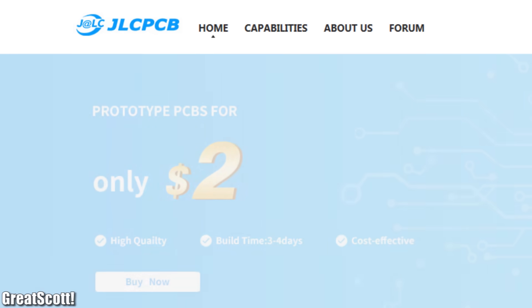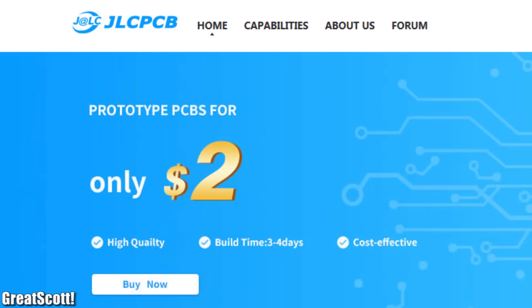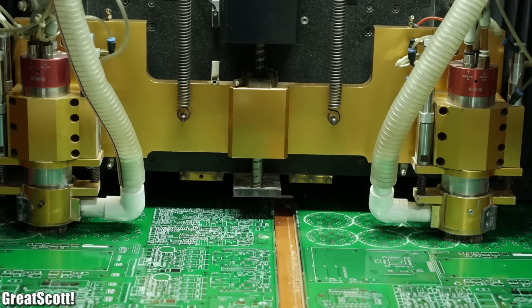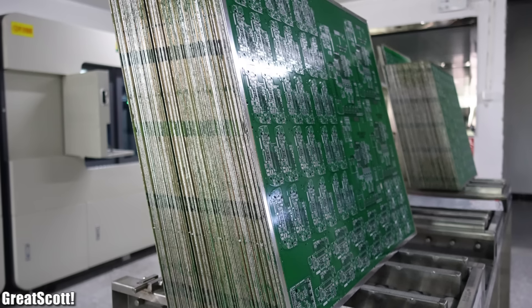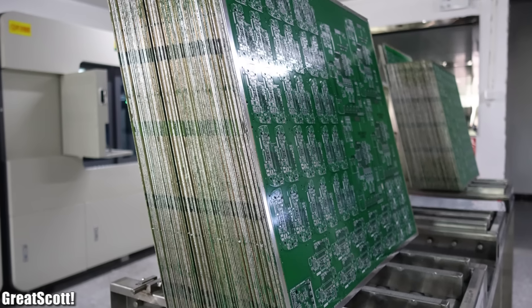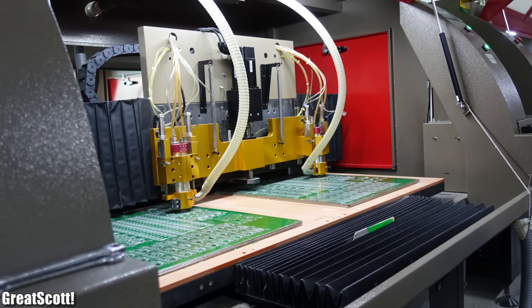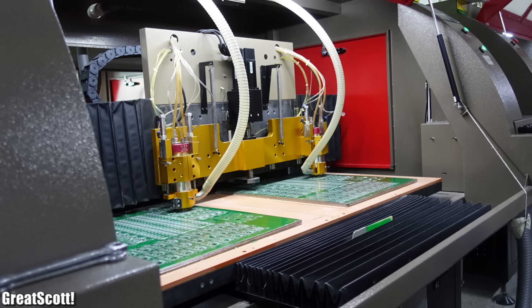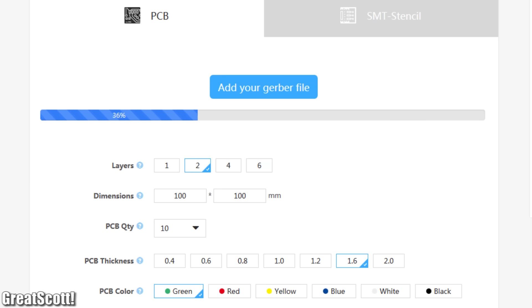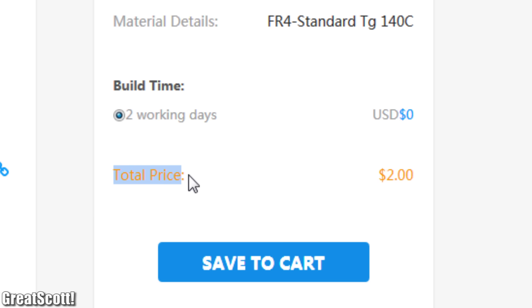This video is sponsored by JLCPCB. One fact about them: JLCPCB was the first PCB company that cut the price from $70 to $7 on two-layer PCBs ten years ago. Upload your Gerber files to order 10 professional PCBs for only $2.